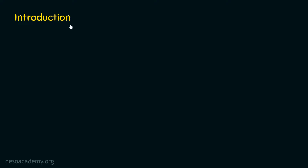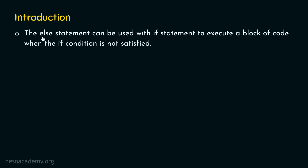Now we want to understand what if-else is. We already know what the if-statement is. The main question is: what is the meaning of else? The else-statement can be used with the if-statement to execute a block of code when the if-condition is not satisfied. So if the condition inside if is not satisfied, then the statements inside the else block will be executed. Let's see the syntax first.